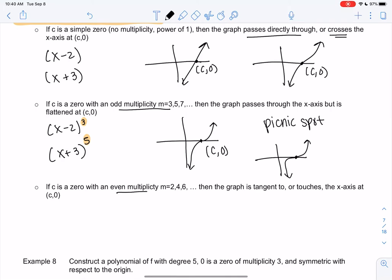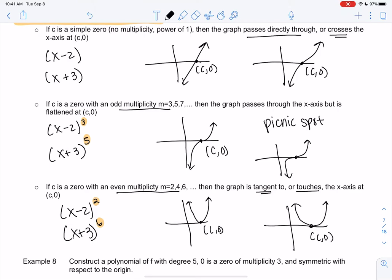The last case is even multiplicity, like (x-2)^2 or (x+3)^6 with even powers. This is not going to cross - it's just going to be tangent. Tangent means it touches but doesn't cross. So here's (c,0), it looks like a parabola, but as the power gets bigger it might touch for longer. Tangent means it's touching but it doesn't cross through. Those are three different ways zeros might look - probably something we never thought about, but they can.